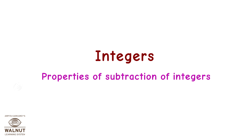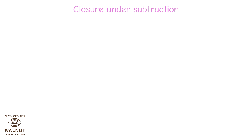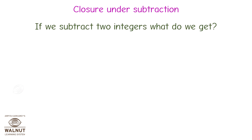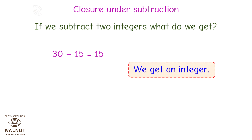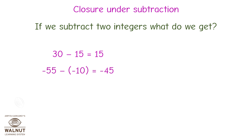Integers: Properties of subtraction of integers. Let's check whether the integers are closed under subtraction or not. If we subtract two integers, what do we get? Let's see. 30 minus 15 is equal to 15. We get an integer.